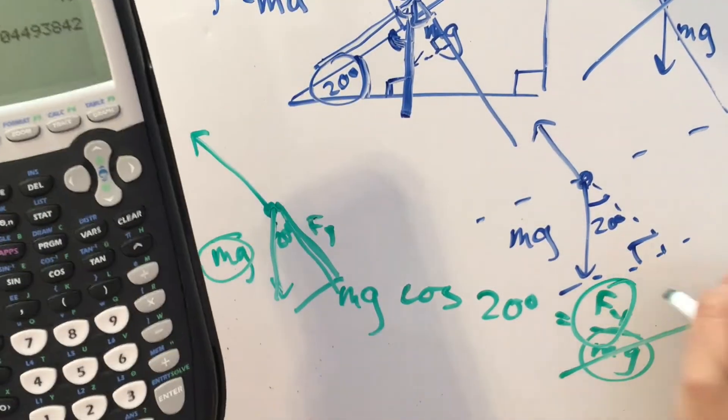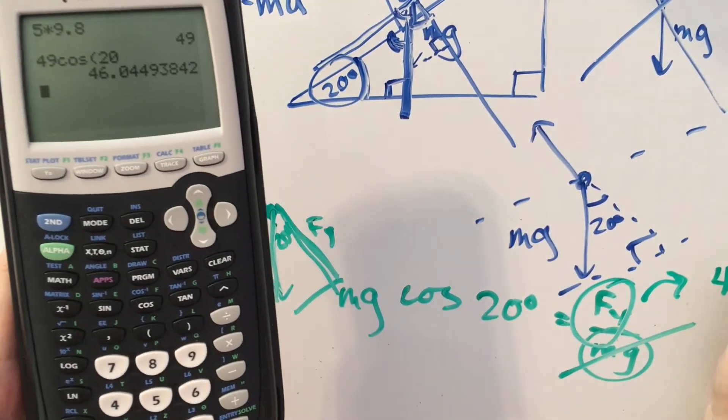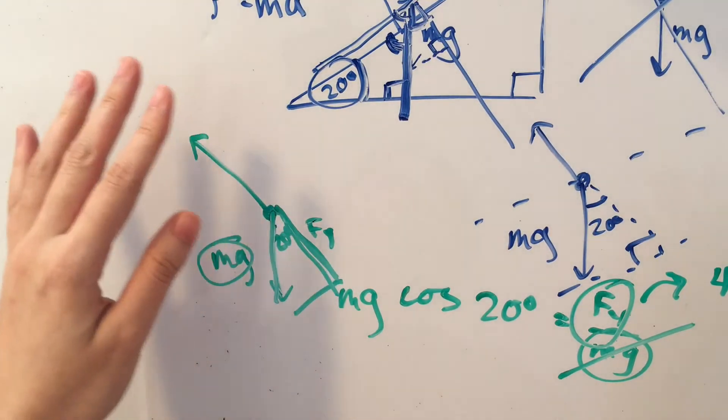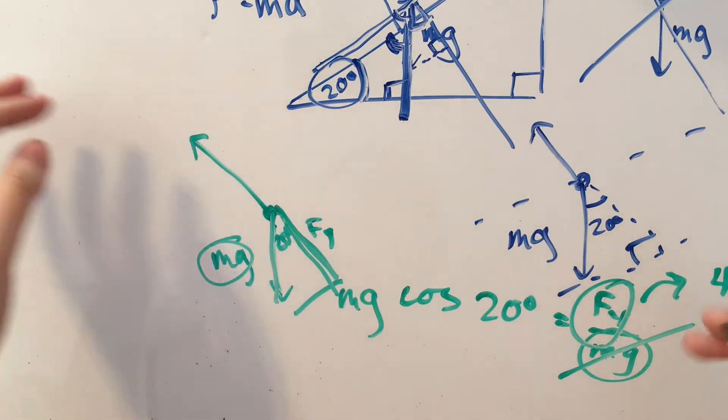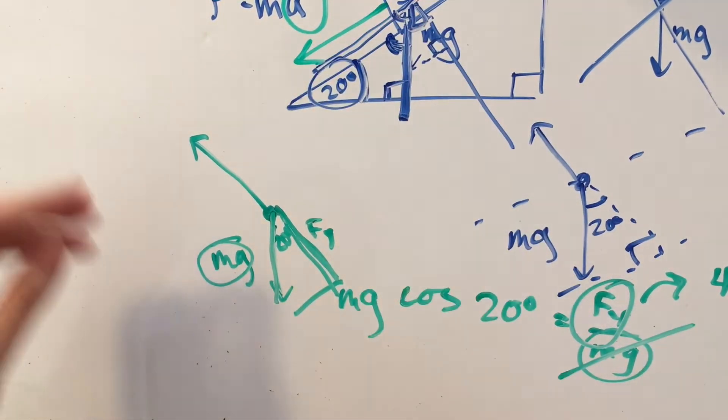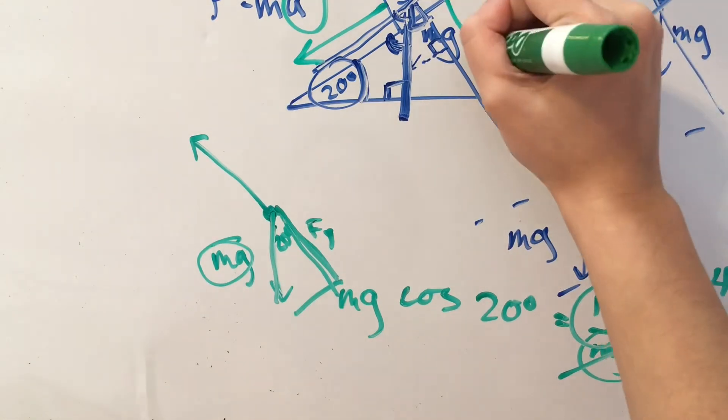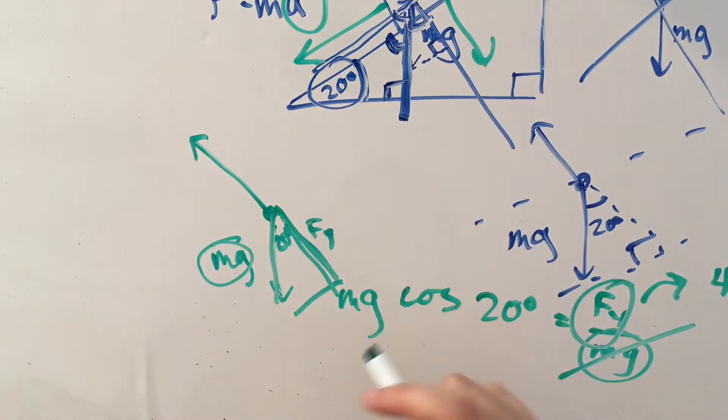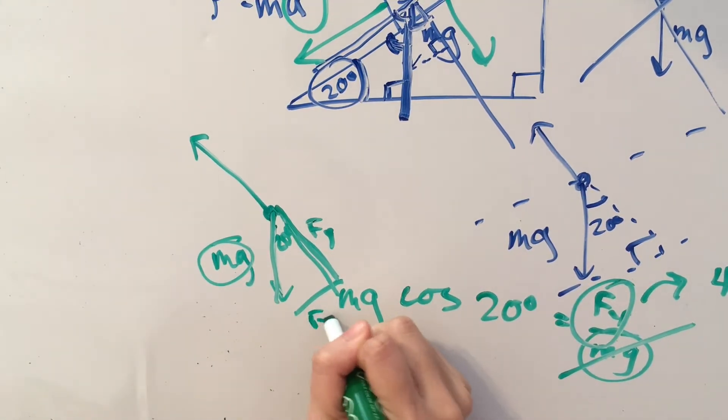So our y component is going to be about 46 newtons. But we don't need the y component for this problem, because remember, we're solving for the acceleration of the block sliding this way down the hill, not this way. It's actually not even moving at all along this vertical axis.